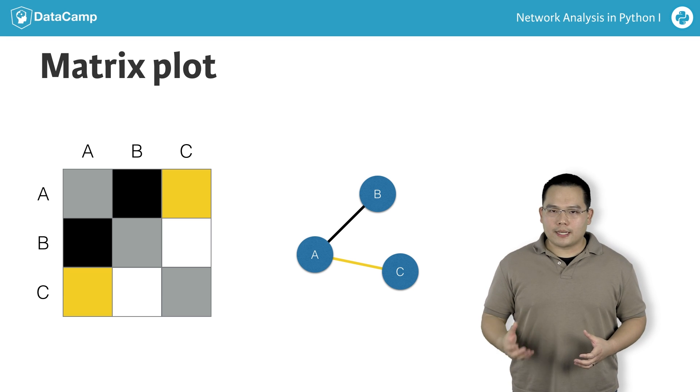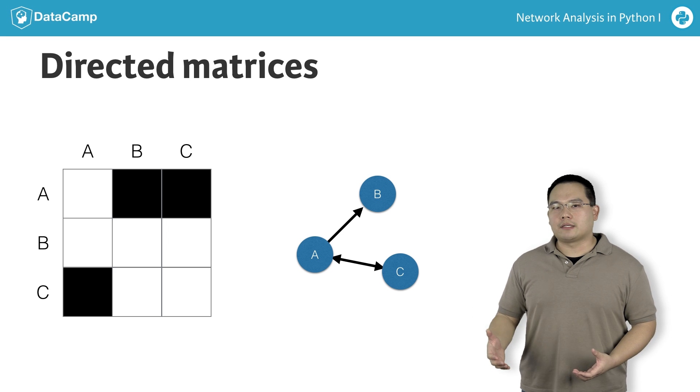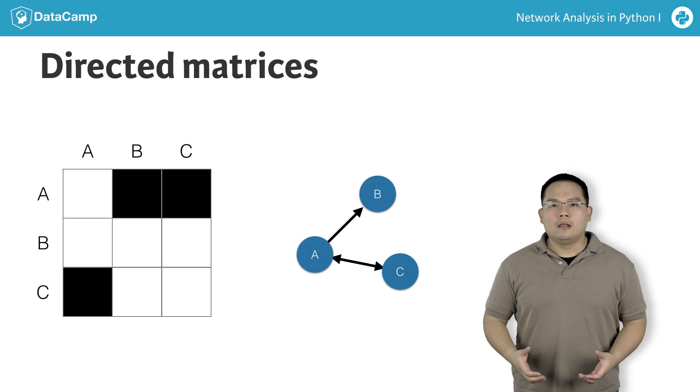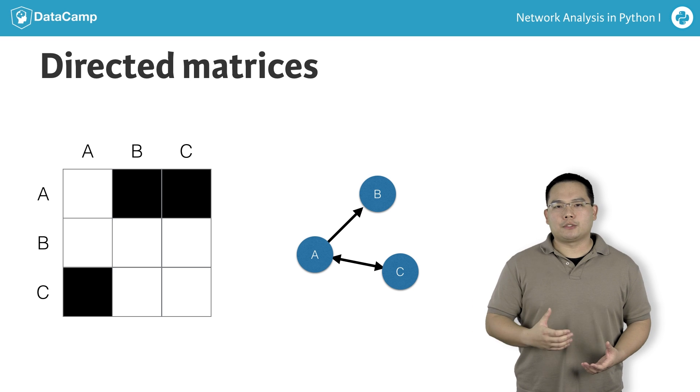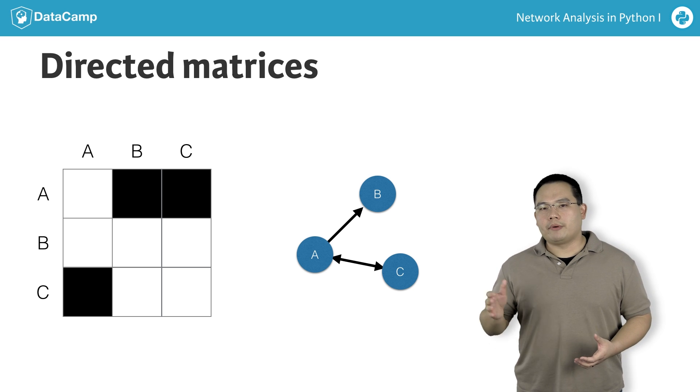If the graph were a directed graph, then the matrix representation is not necessarily going to be symmetrical. In this example, we have a bidirectional edge between A and C, but only an edge from A to B and not B to A. Thus, we will have AB filled in, but not BA.